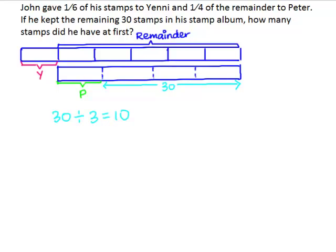We want to find the total value of the remainder, which would be the 4 units in this model. So we take 10 times 4, which gives us 40. 40 is the total value of the remainder.